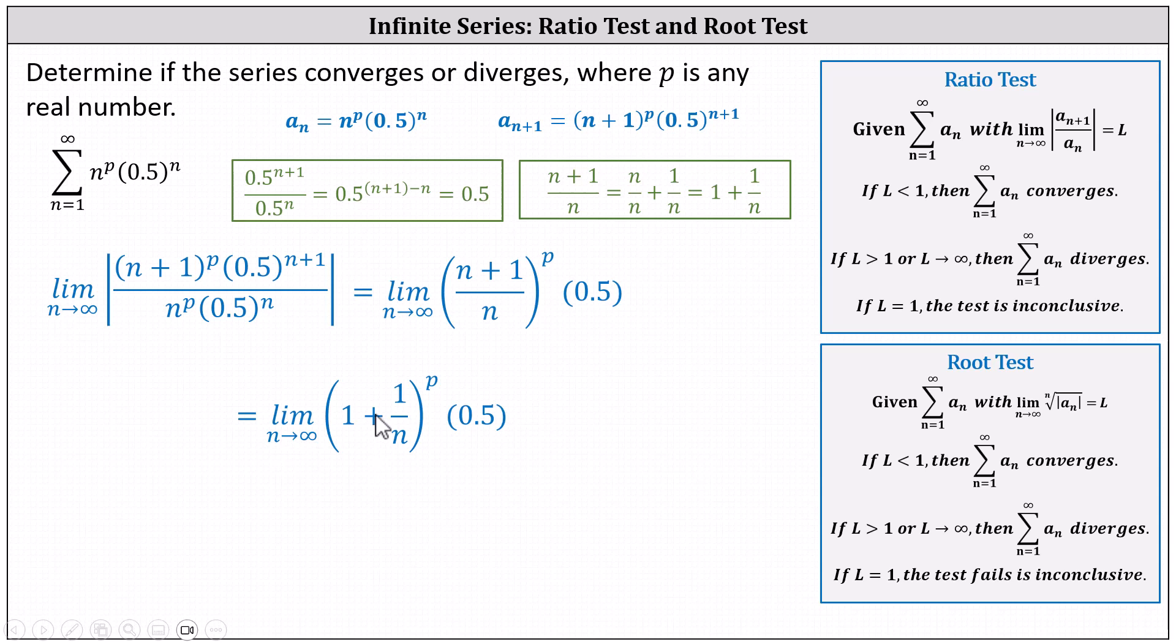Focusing on the expression inside the parentheses, as n approaches infinity, notice 1 divided by n approaches 0. And therefore 1 plus 1 divided by n approaches 1.